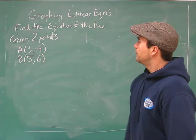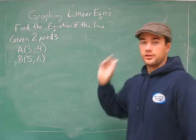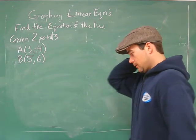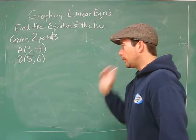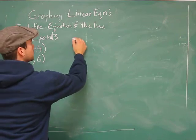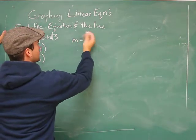All right, once again, find the equation of the line, but this time we're just given two points. Let's see what happens here. Well, always a good thing is to start with slope, because we know slope is rise over run.